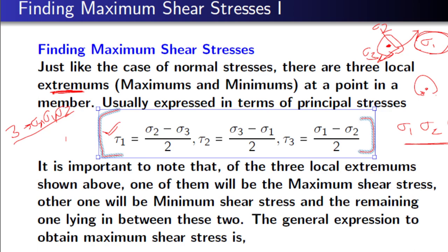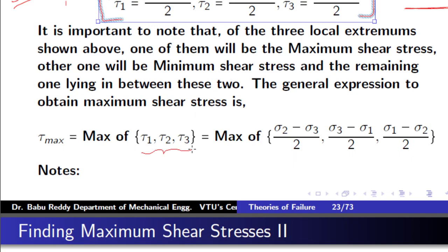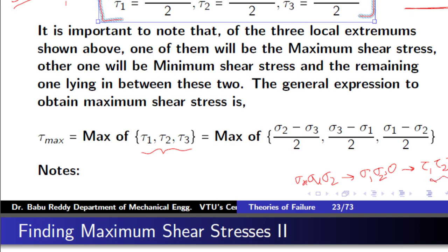You have expressed shear stress in terms of principal stresses. You will get three values of shear stresses, and among these three you choose the numerically maximum as the maximum shear stress. The rule is: from sigma x, sigma y, sigma z, find principal stresses sigma 1, sigma 2, and sigma 3 (which is zero in 2D). From the principal stresses find tau 1, tau 2, tau 3. The maximum among these will be known as tau max.